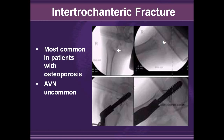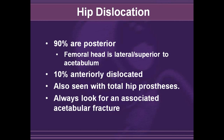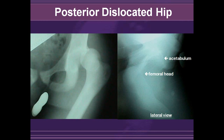Hip dislocations are more rare than shoulder dislocations. However, compared to shoulder dislocations, hip dislocations are most often posterior, whereas 10% are anterior. Hip dislocations are also much more common in patients who have had total hip replacements, and you should always look for acetabular fracture dislocation. Here is an AP view of a patient with a posterior hip dislocation where the hip is overlapping the acetabulum and is superiorly displaced. On the lateral view, you can see the femoral head is posterior to the acetabulum.